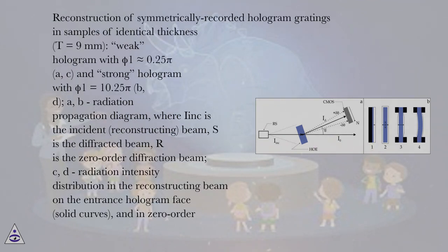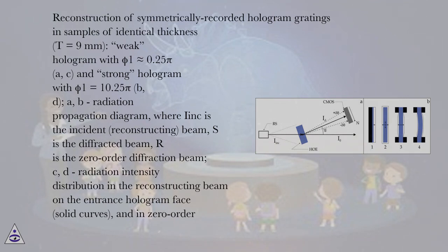Reconstruction of symmetrically recorded hologram gratings in samples of identical thickness of 9 mm: a weak hologram with φ₁ = 0.25π, and a strong hologram with φ₁ = 10.25π. Radiation propagation diagrams show: F_ink is the incident reconstructing beam, S is the diffracted beam, R is the zero-order diffraction beam. Radiation intensity distributions in the reconstructing beam on the entrance hologram face are shown as solid curves, zero-order as dot lines, and diffracted beam as dash lines, on the hologram exit face.